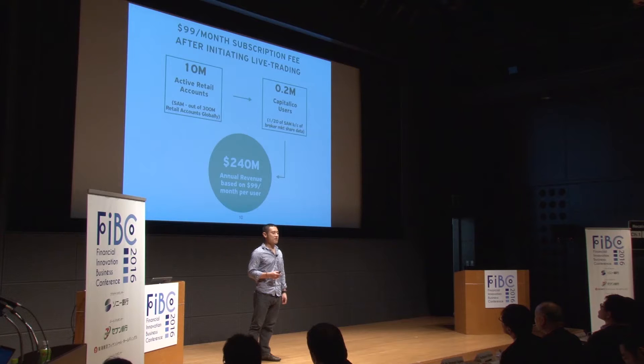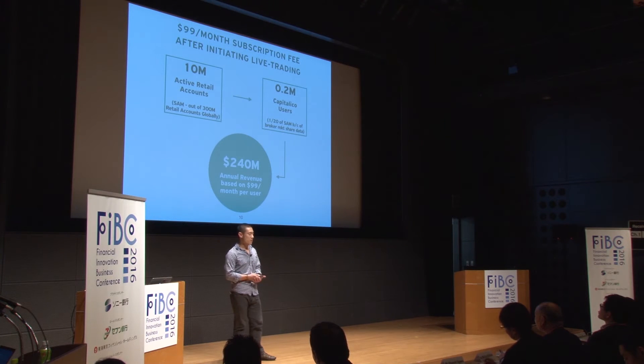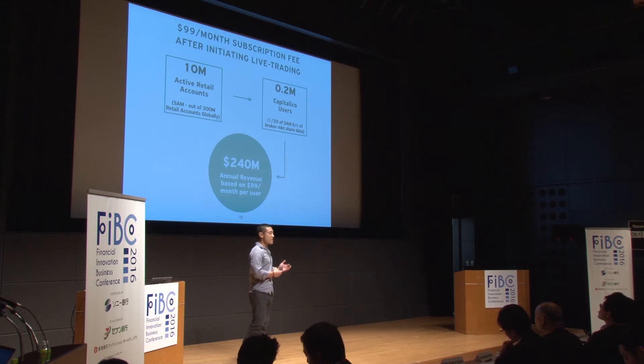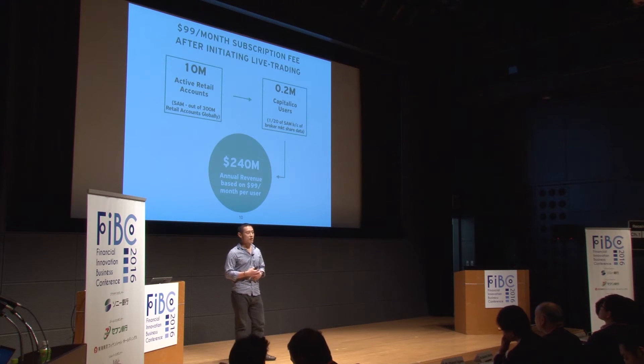Our business model is very simple. We have a free plan and a premium plan. The premium plan charges $99 per month when you start live trading, such as trading signal alerts or fully automated algorithms. With the active rates of retail trading accounts considered, we are calculating about $240 million in revenue for us.